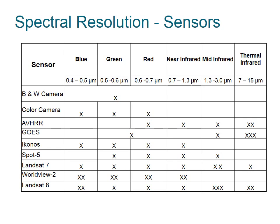Satellite remote sensors were able to capture not only the visible light spectrum, but also the near-infrared, mid-infrared, and thermal-infrared regions. The general trend in this table as we progress to more modern remote sensors is an increase in spectral resolution. For example, WorldView II captures eight bands of information.